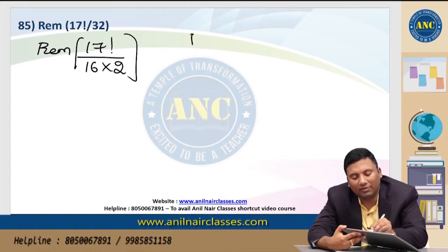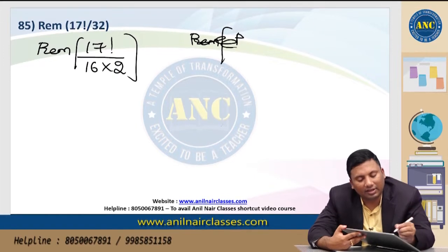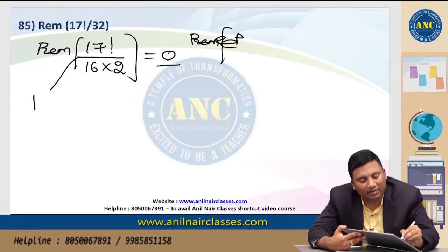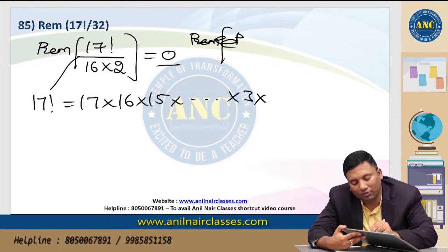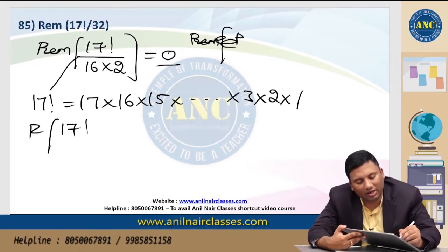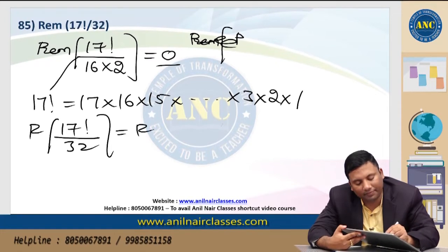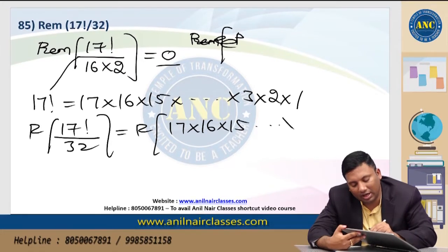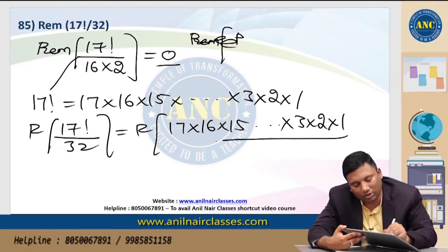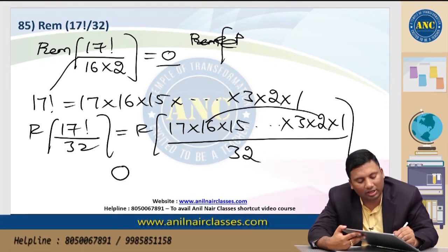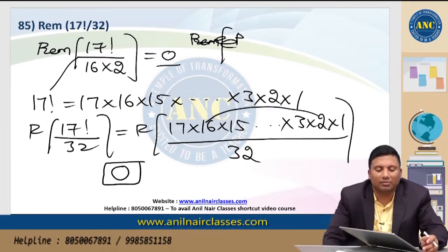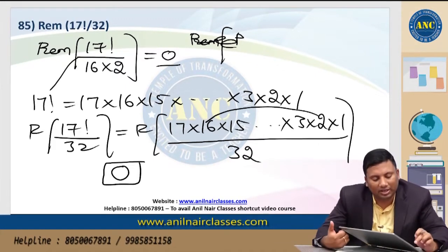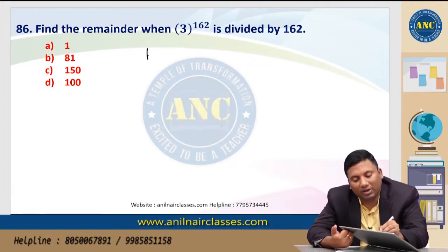32 is 16 × 2. The answer is 0 because 17 factorial is 17 × 16 × 15 × ... × 3 × 2 × 1. So 17! divided by 32 — since 32 appears as a factor within 17!, and 32 × anything divided by 32 gives 0 remainder. Answer is 0.